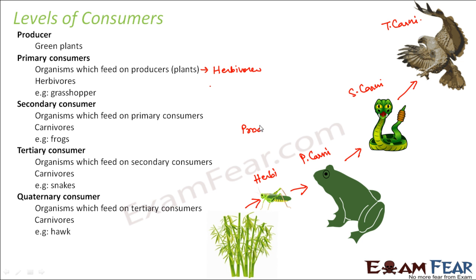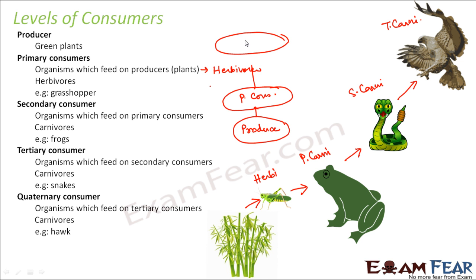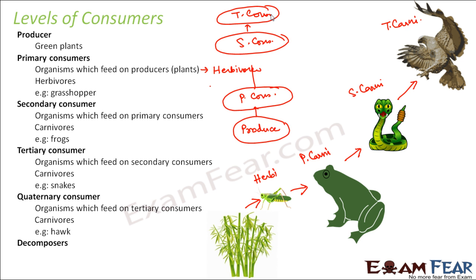So this is how the levels keep increasing. You start with the producer at the base; above the producer you have the primary consumer, above this the secondary consumer, above this the tertiary consumer, and so on. Based on these levels of consumers, we will see how energy flows from one level of consumer to another.